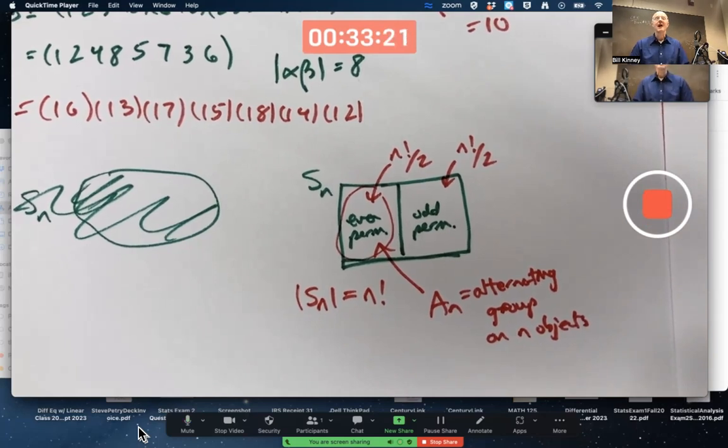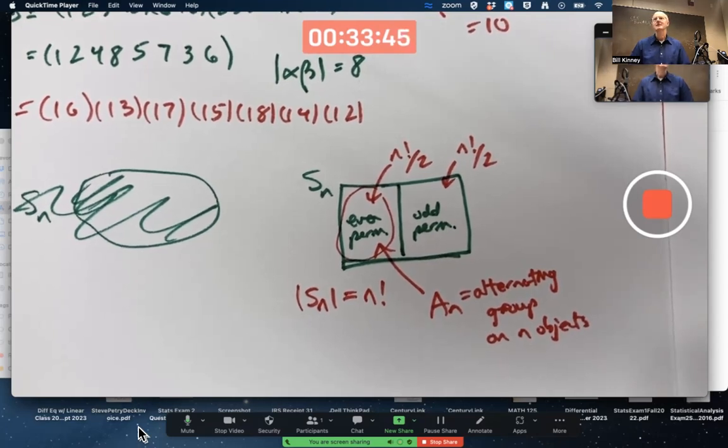AN and SN are very important historically in group theory. And especially once you get to N equals 5, things start to get pretty interesting in terms of understanding more challenging kinds of group theory. A5, just got 60 elements, is a pretty interesting group in group theory. We don't really have time to study it in depth, but it's a pretty interesting group.